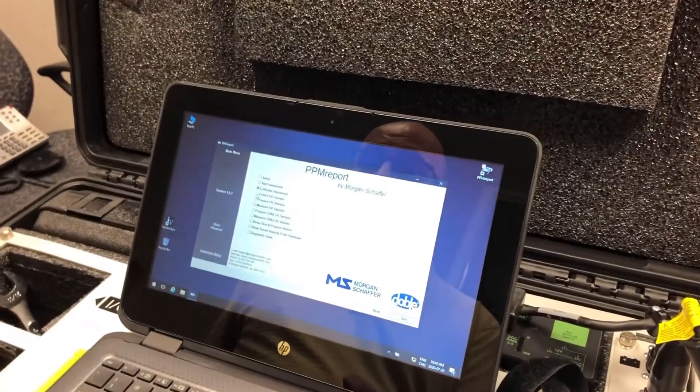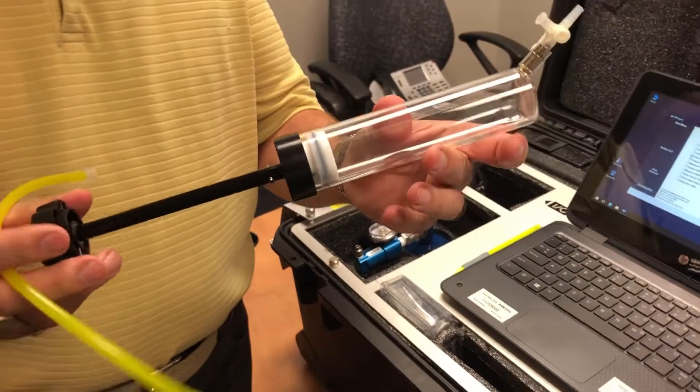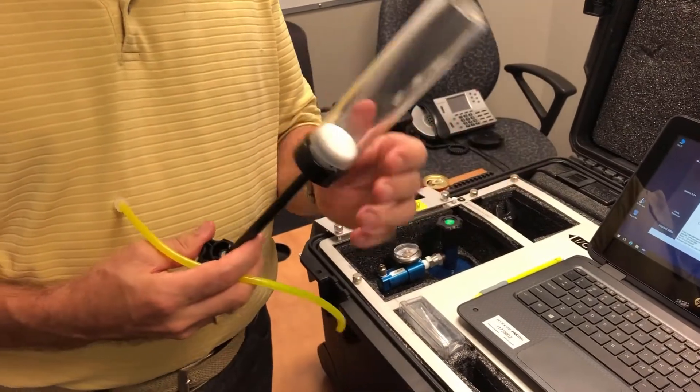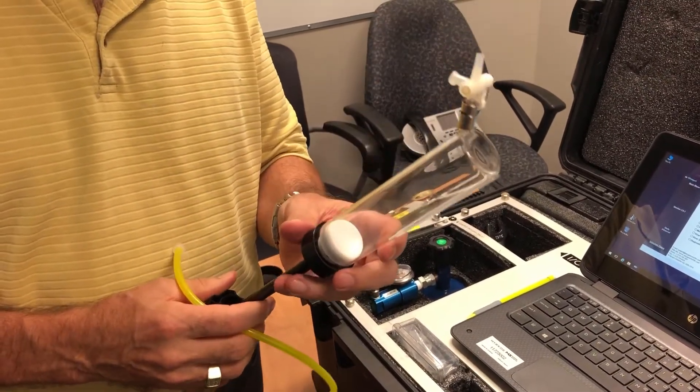Okay, so the next step now is how to collect the oil sample. So this is the shake test syringe that comes with the Mircos. It's specially designed for Morgan Schaefer.